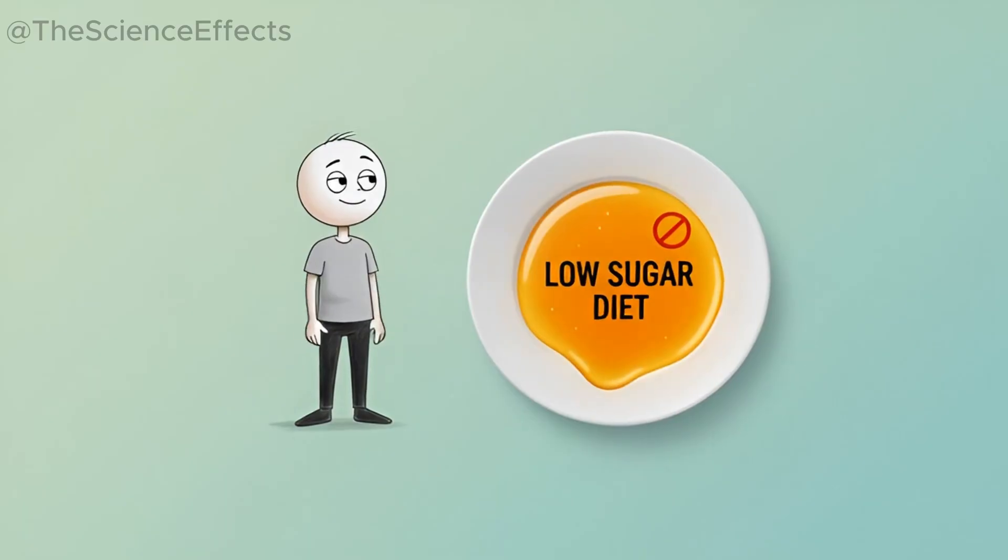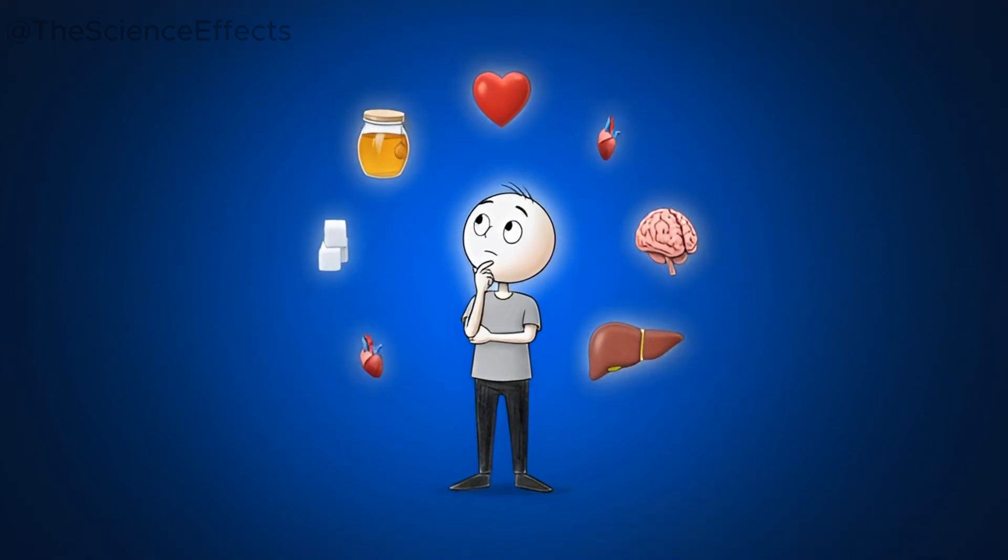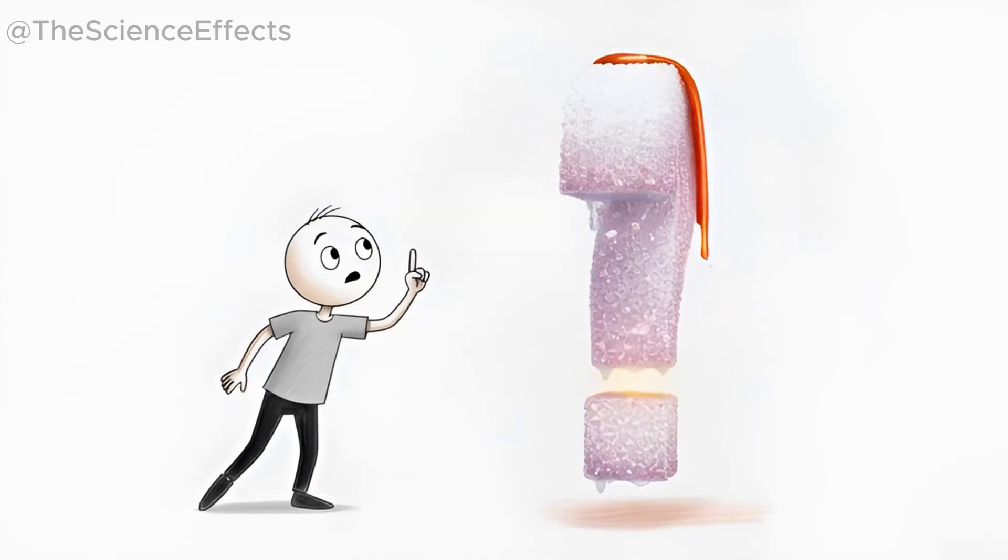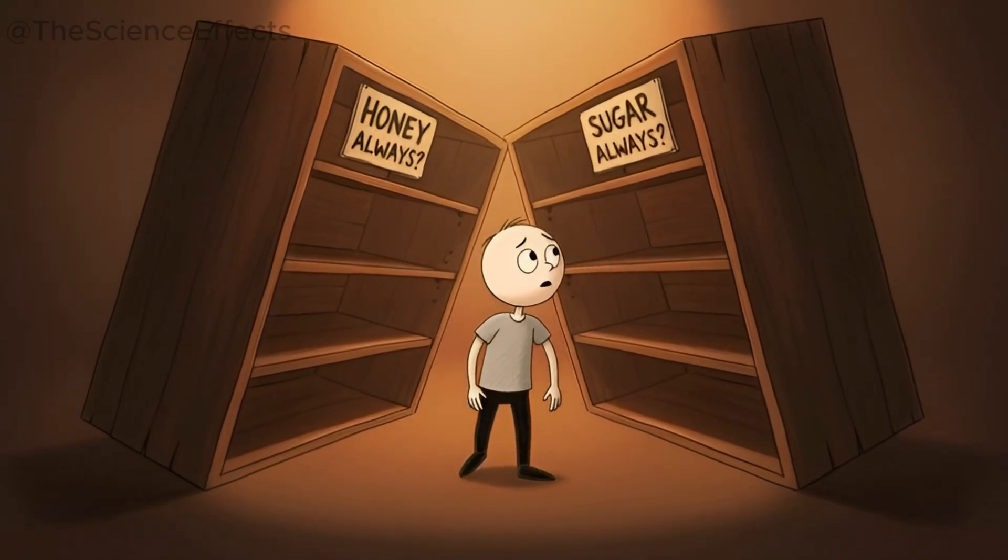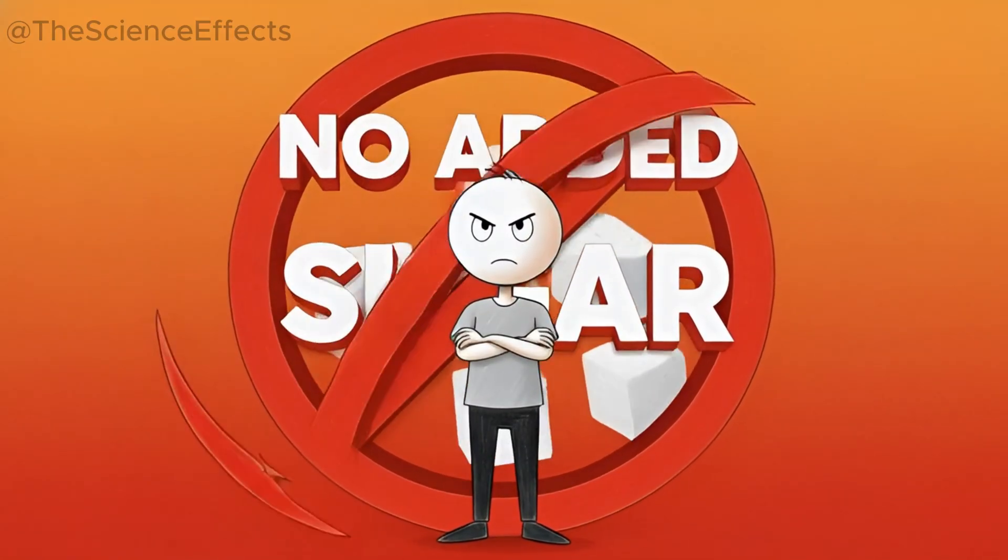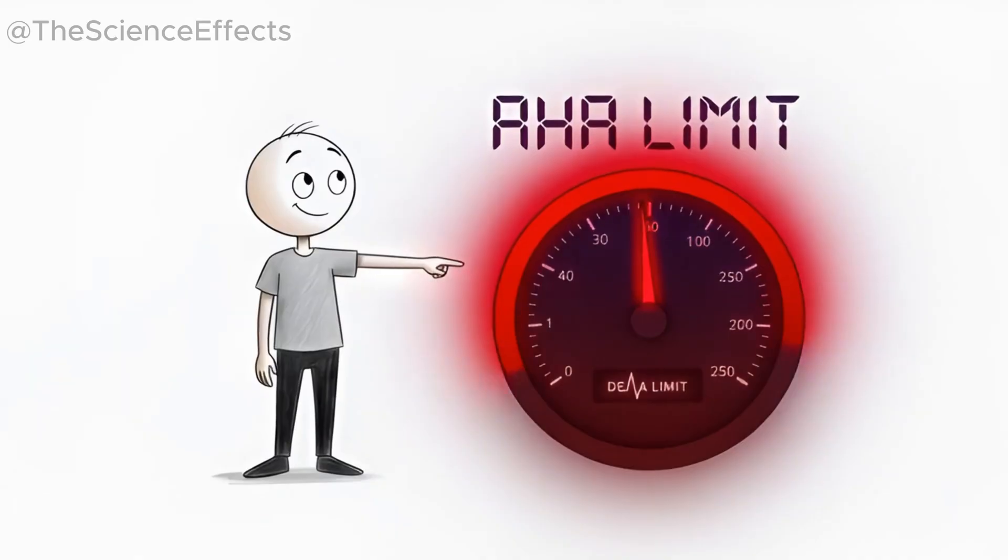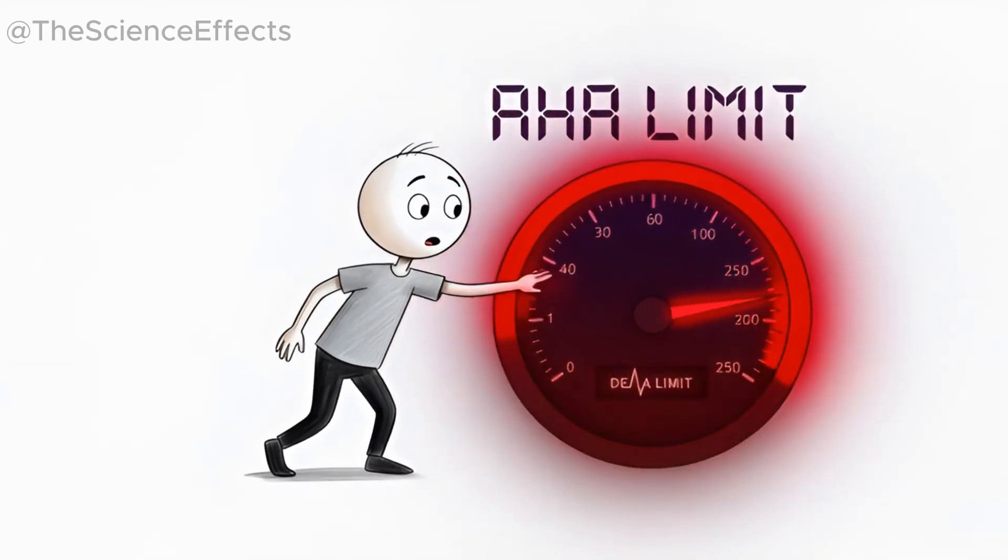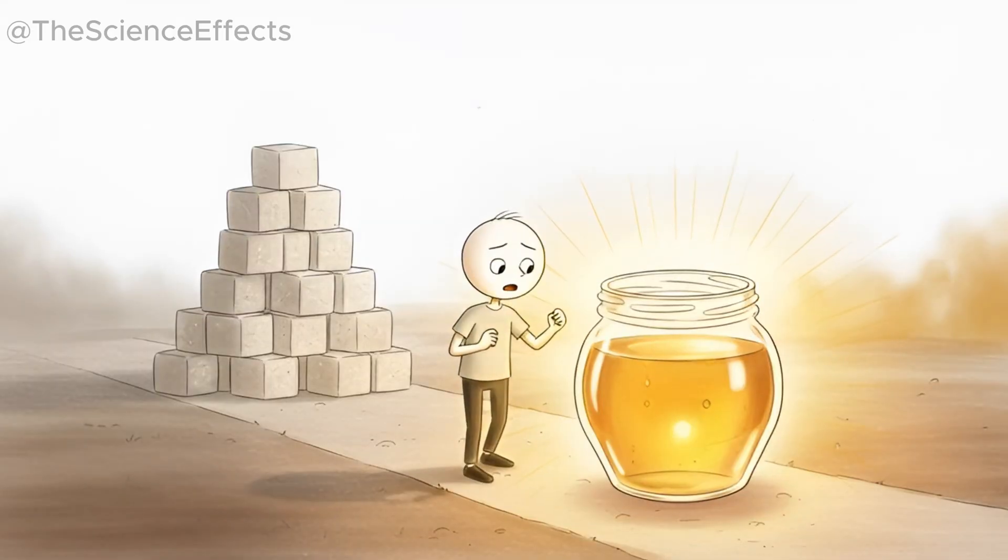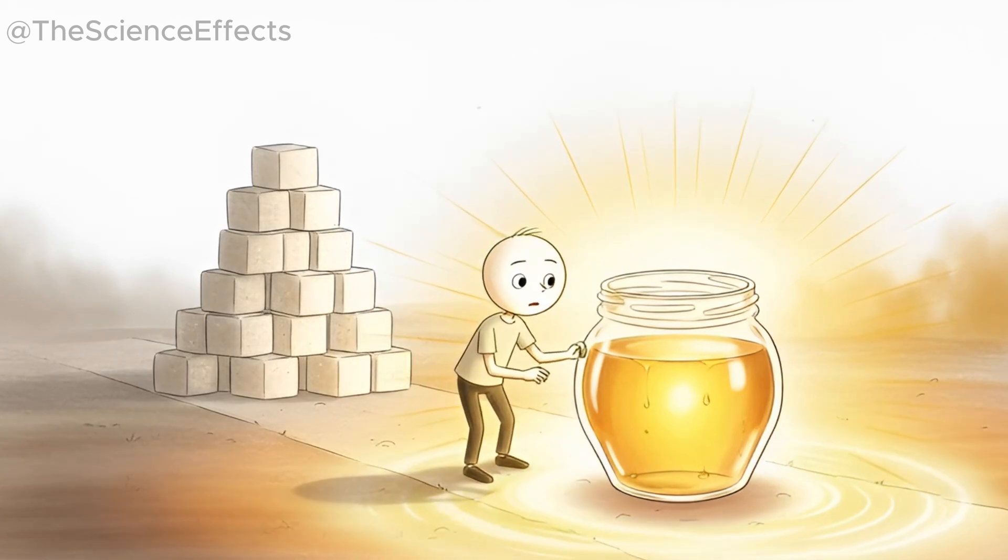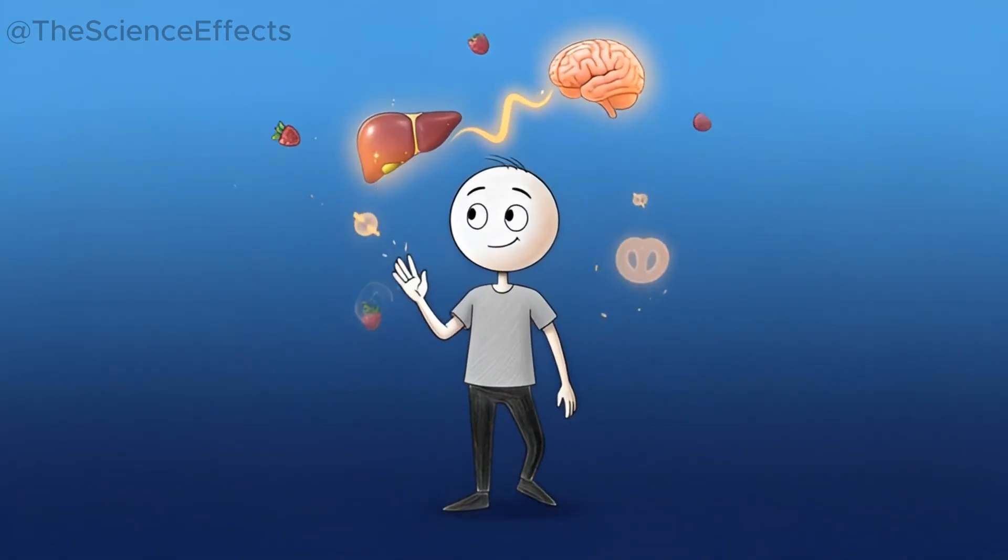My experiment taught me something really important. The question, is honey healthier than sugar, is the wrong question. It makes it sound like we should be picking one to eat all the time. The real lesson is that we should be cutting back on all added sugars, period. Those guidelines from the American Heart Association - that's not a target to aim for. It's a hard upper limit. And most of us blow past it without even knowing. Choosing raw honey over table sugar is a good move. It's a step in the right direction. It gives you a tiny nutritional leg up and, maybe, helps you sleep a bit better.